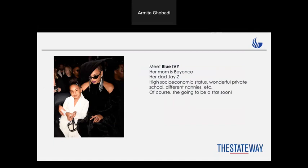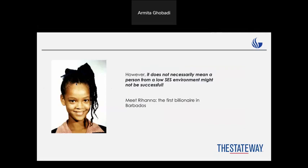Another example: let's talk about Blue Ivy. Her mom is Beyoncé and her dad is Jay-Z. She was born into a high socioeconomic status — she had a wonderful private school and different nannies. Her mom is a dancer and a singer, so she has everything. She can be a star soon if she wants, because she has the genes, the nature, and the environment, with every possible layer interacting in a positive way.